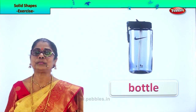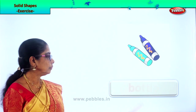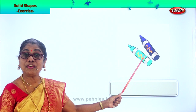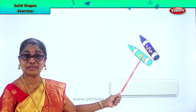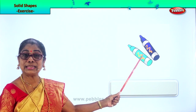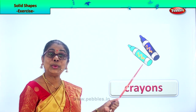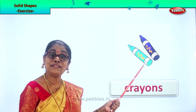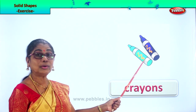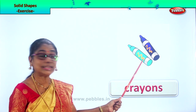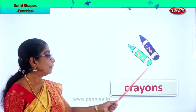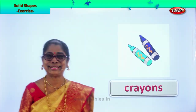What are these? Crayons! Crayons are also the shape of a cylinder. So now we have learned lots of examples. Crayons are also the shape of a cylinder.